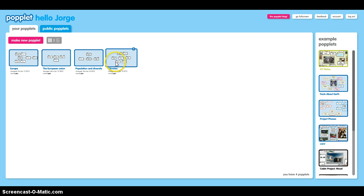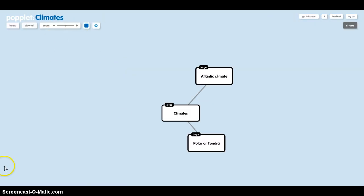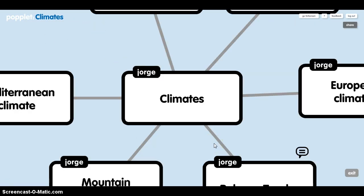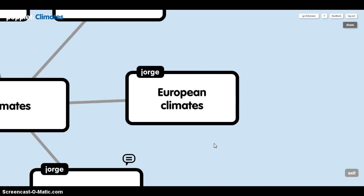Let's go to the second mind map: Climates. European climates. Most of Europe is in the temperate zone. In the northern hemisphere there are a variety of climates.